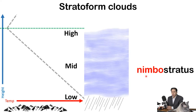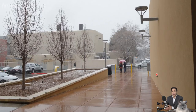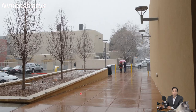Now, if that thick stratus cloud is raining, we're going to add the prefix nimbo to it — and that's a thick stratus cloud that's raining: nimbostratus. We don't get a lot of nimbostratus in New Mexico. Typically when you have a nimbostratus, it's raining all day long. Here's what nimbostratus looks like: a solid gray sky and it's either raining or snowing.